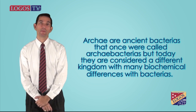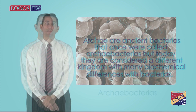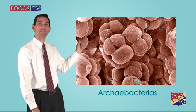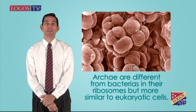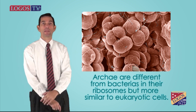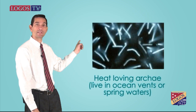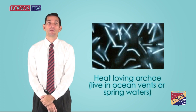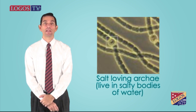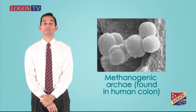Archaea are ancient bacteria that were once called archaebacteria, but today they are considered a different kingdom with many biochemical differences from bacteria. They are smaller and simple like bacteria and have no nucleus. They come in very unusual shapes like flat or square. Archaea are different from bacteria in their ribosomes but more similar to eukaryotic cells. Archaea normally live in very harsh and extreme conditions, like hot springs with temperatures above water's boiling point or in salt lakes. They have even been found alive in outer space in astronaut equipment.